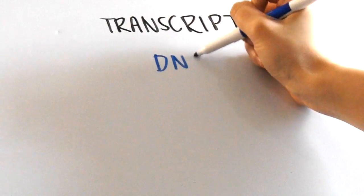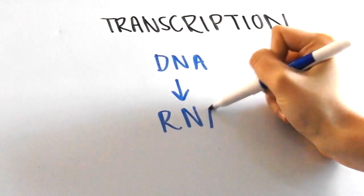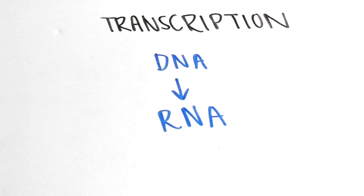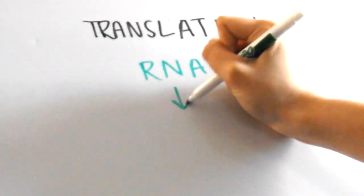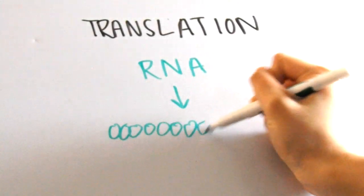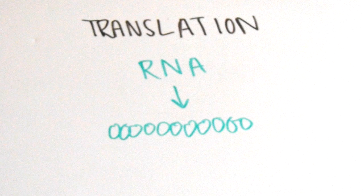First, during transcription, the information that is provided in the DNA of an organism is transcribed into an RNA sequence. Second, during translation, the RNA sequence is translated into amino acids, which then make up the final proteins.